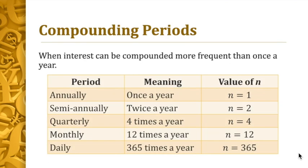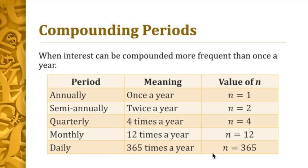We can compound the interest more than once a year. Annual is n equals one. Semi-annually or biannually is twice a year, so n equals two. Quarterly is four times a year, so n equals four. Monthly is 12 times a year, n equals 12. Daily is 365 times a year, n equals 365 — we'll use the ordinary 365 days and disregard leap years to keep it simple.